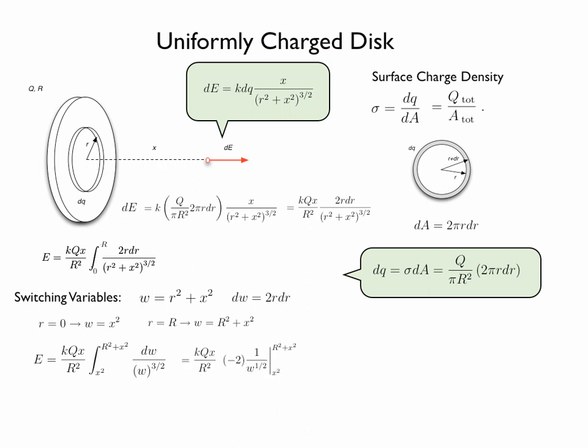The integral is simply equal to minus 2 over w to the power of one half. So we can write the electric field of the disk as kQx over R squared, times minus 2 over w to the power of one half, evaluated with limits from x squared to big R squared plus x squared.